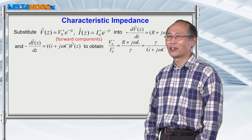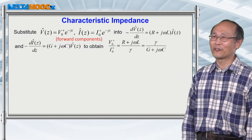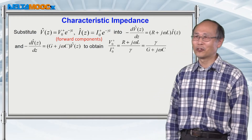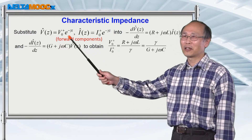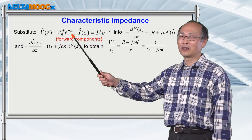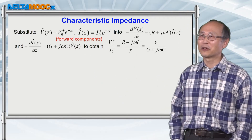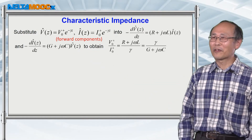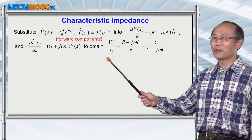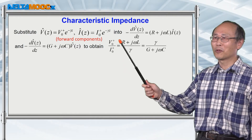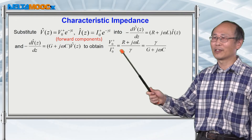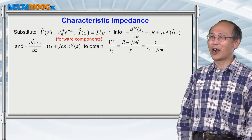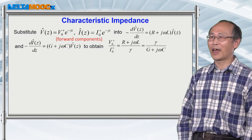Before we add the load into the circuit, let me first define a very important parameter called the characteristic impedance for a transmission line. Let's go back to see the general solution for voltage and current along the forward direction and put them into the expressions we derive from the lumped circuit model. Then you can come up with this ratio, which is the forward voltage divided by the forward current, given by this expression, which is a function of R, L, G, C and also the angular frequency.